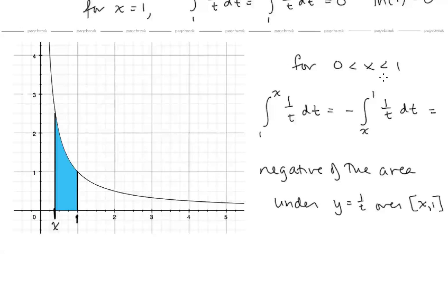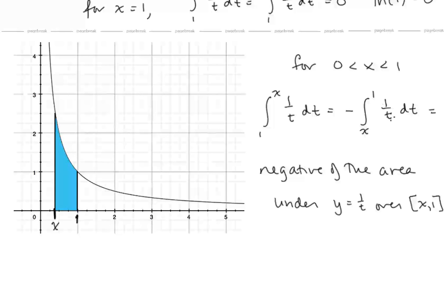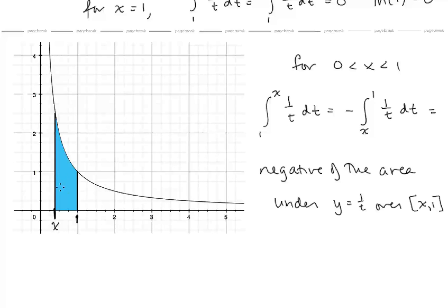For x between 0 and 1, we want to reverse the order of the bounds, so we introduce a negative sign, and this is negative integral from x to 1 of 1 over t dt. So that's negative of the area under y equals 1 over t over the interval from x to 1 — negative of this area for all x values between 0 and 1.